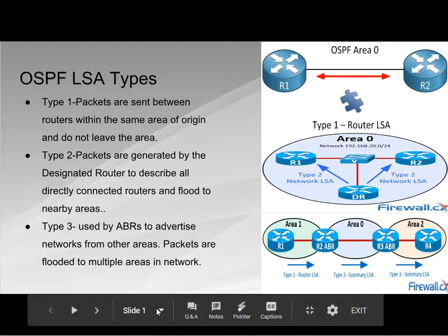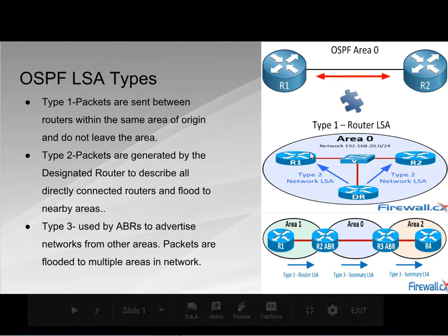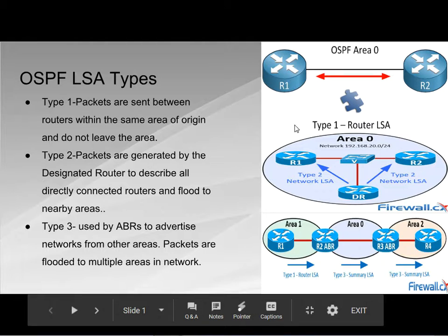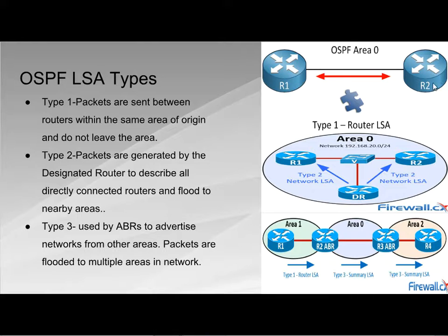In a type 1 link state advertisement, packets are sent between the area of origin and do not leave that area. As you can see in the diagram, packets are being sent to routers 1 and 2 back and forth, and they don't leave the area.